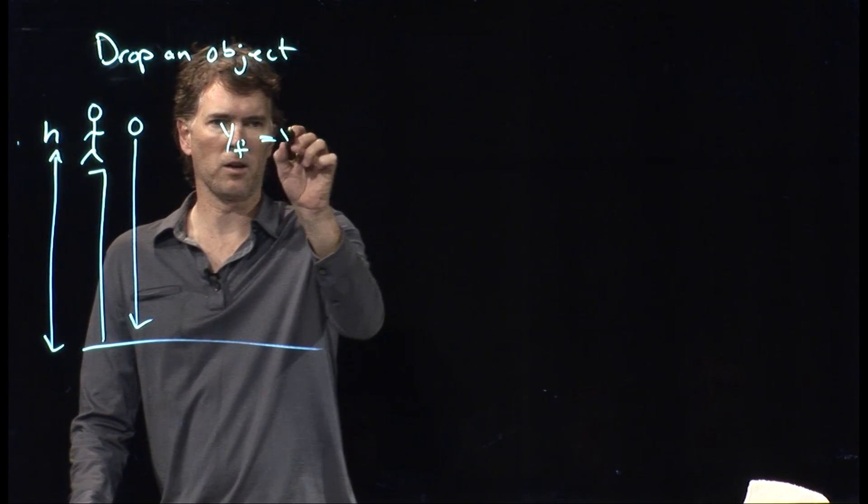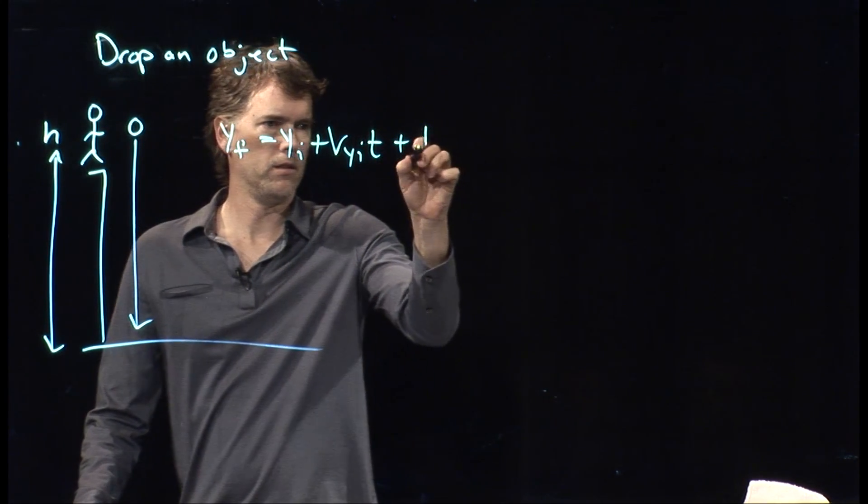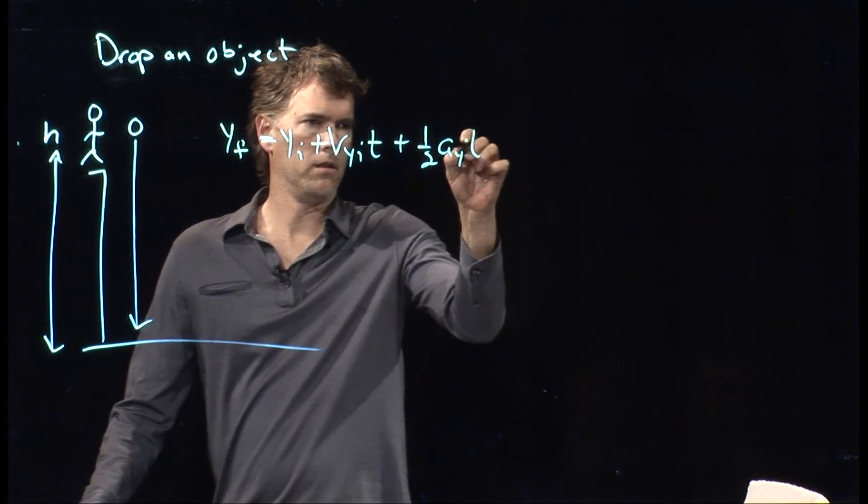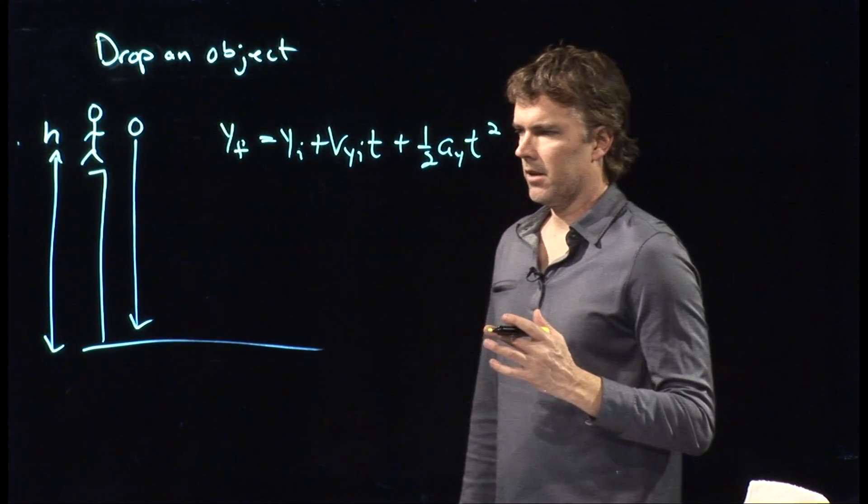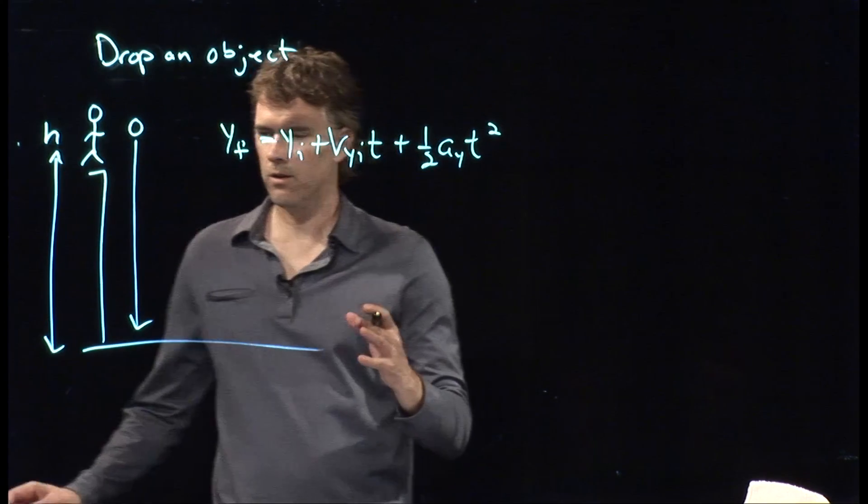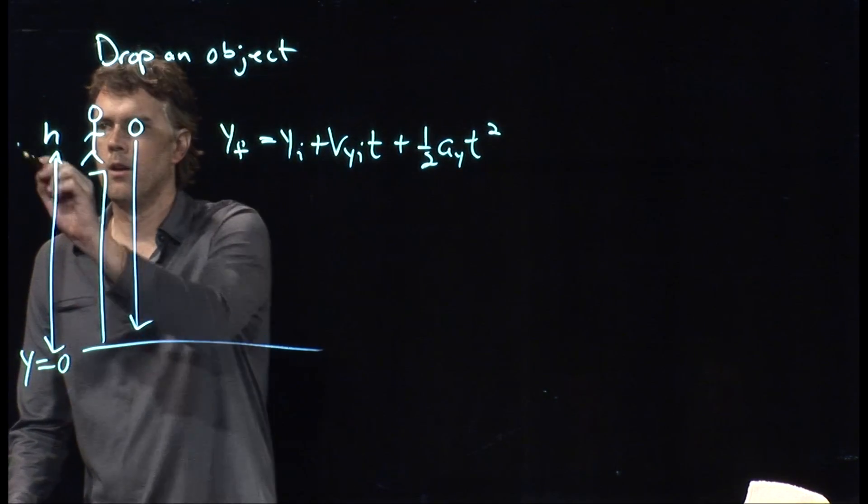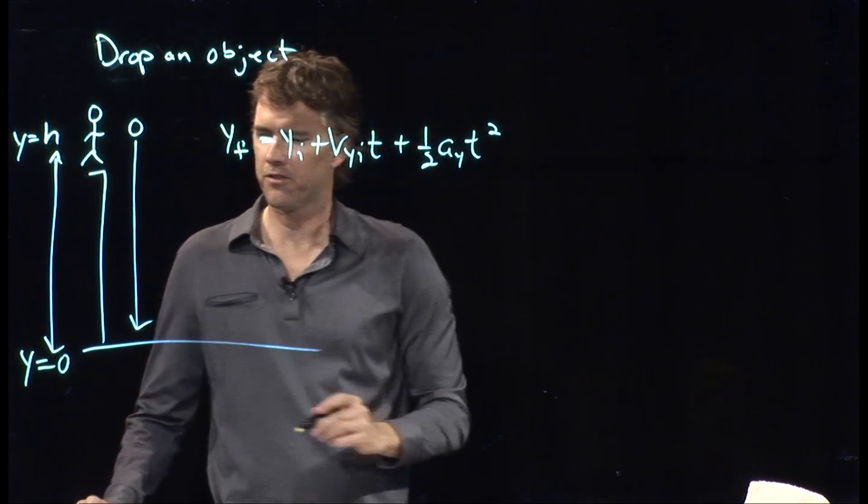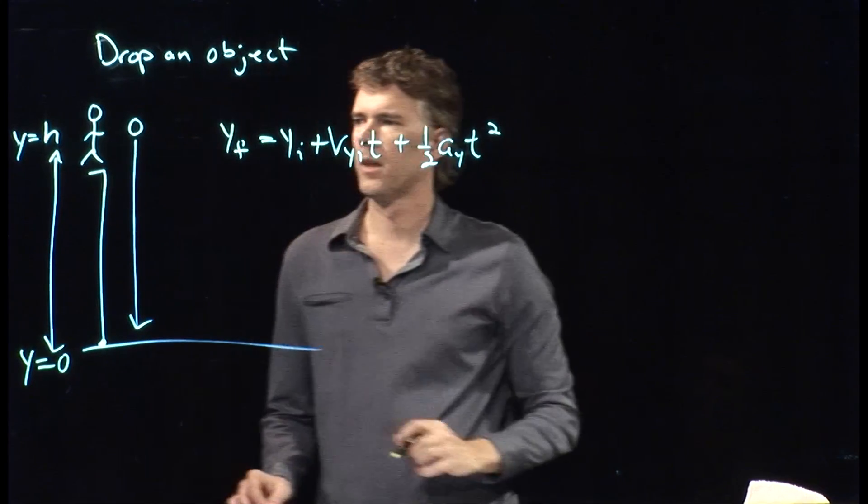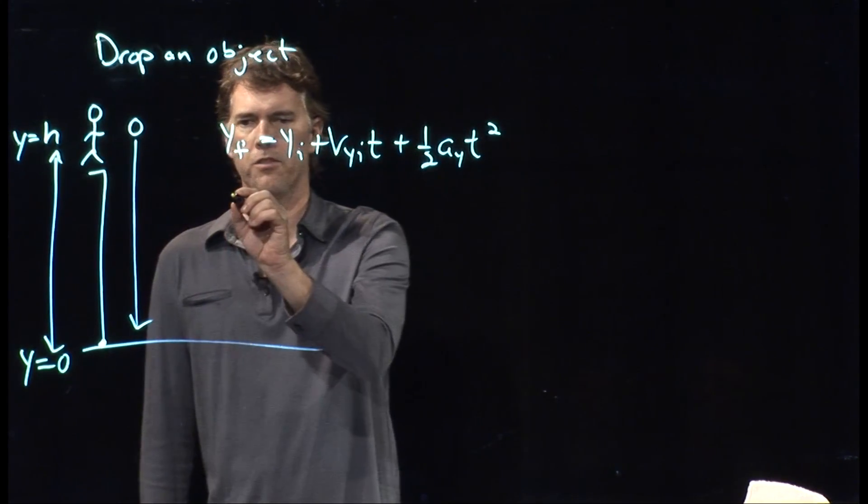So we go back to our kinematic equations. And now we can probably just plug in these numbers. Whenever you have a picture like this, you always have to identify some coordinate system. We'll say that y equals zero starts at the ground and goes up, and so y equals h is in fact where we started.